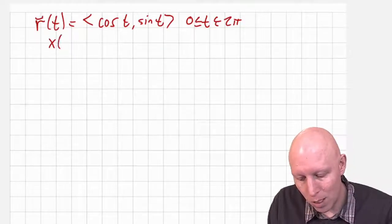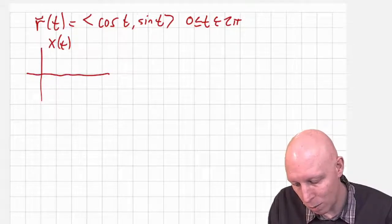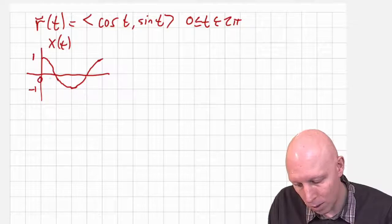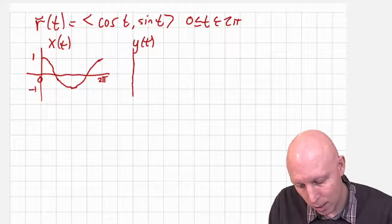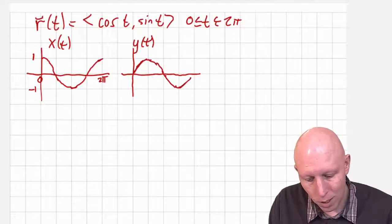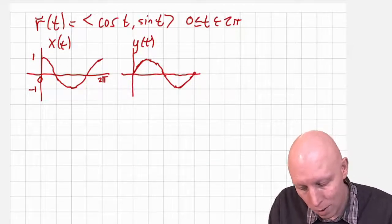Let's do it the second way that we talked about before. x of t is cosine of t — from zero to two pi, that starts off at one, goes down to negative one, and back up to positive one. y of t is going to be sine of t. Sine of t starts off at zero, goes up to one, comes back down to zero, then goes down to negative one, and back to zero. So that's x of t and y of t from zero to two pi.